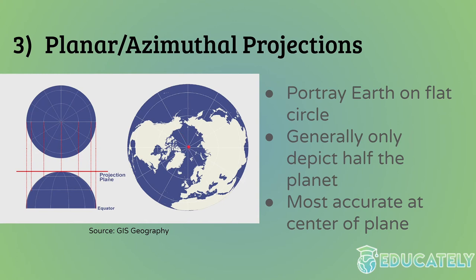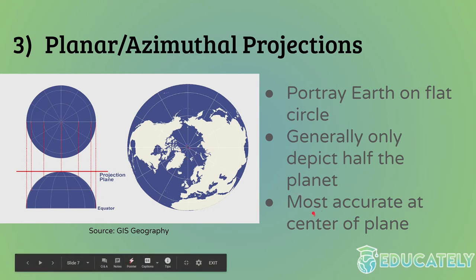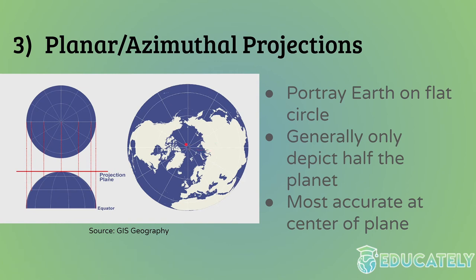The main reason azimuthal projections are actually used is to study the poles, especially Antarctica, because other map projections tend to heavily distort that part of the world. Azimuthal projections are most accurate at the center of the plane, which is usually centered at the poles. If centered on the south pole, Antarctica would be right in the middle, perfectly aligned and minimally distorted. So it's good for studying Arctic regions and Antarctica.